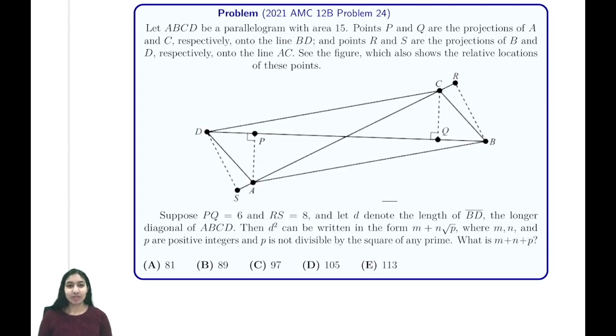Hi everyone, in this video we're going to look at problem 24 from the 2021 AMC 12B. ABCD is a parallelogram with area 15. Points P and Q are the projections of A and C respectively onto line BD, and points R and S are the projections of B and D onto line AC. We're told that PQ equals 6, RS equals 8, and d is the length of BD, the longer diagonal of ABCD. We need to find d squared expressed in a specific form.